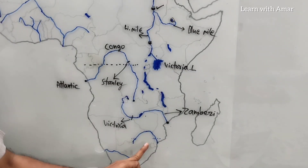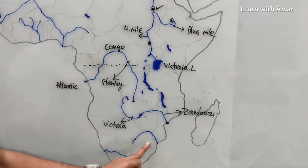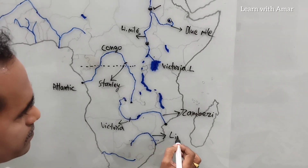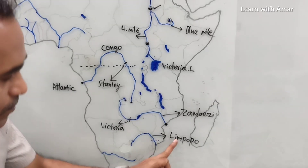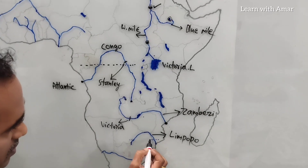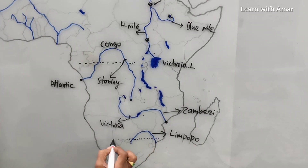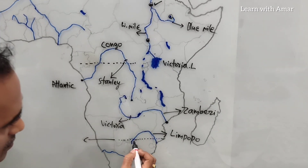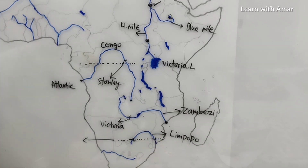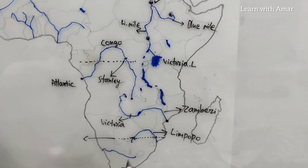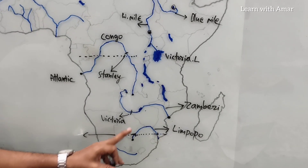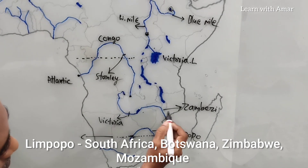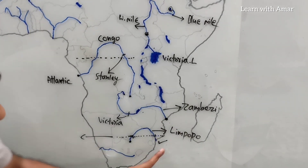Now the next one also has a special feature. This river's name is Limpopo. River Limpopo crosses the Tropic of Capricorn twice — one time and a second time. It originates in South Africa, then goes through Botswana, then Zimbabwe, and again joins Mozambique. Finally, it joins the Indian Ocean.